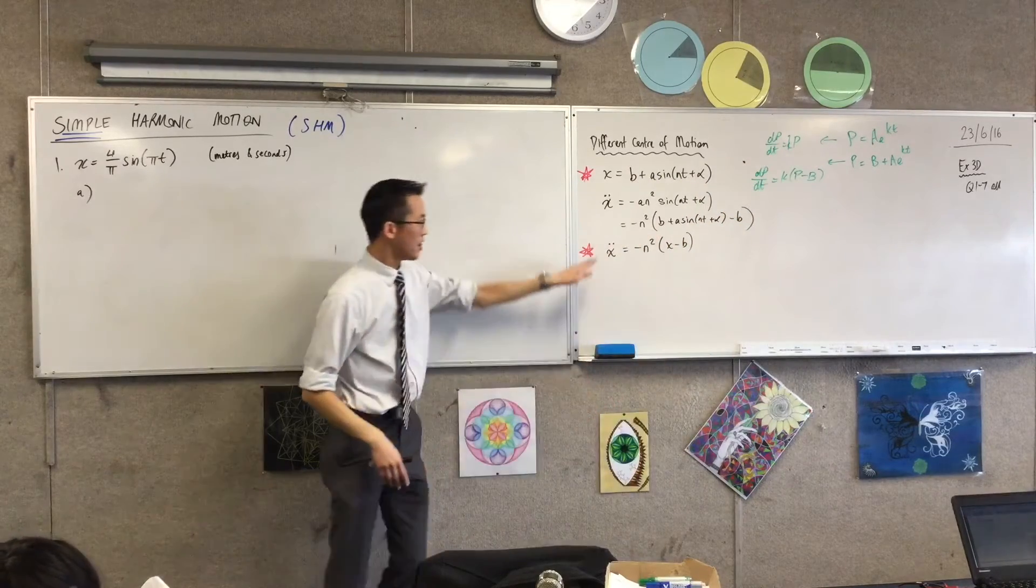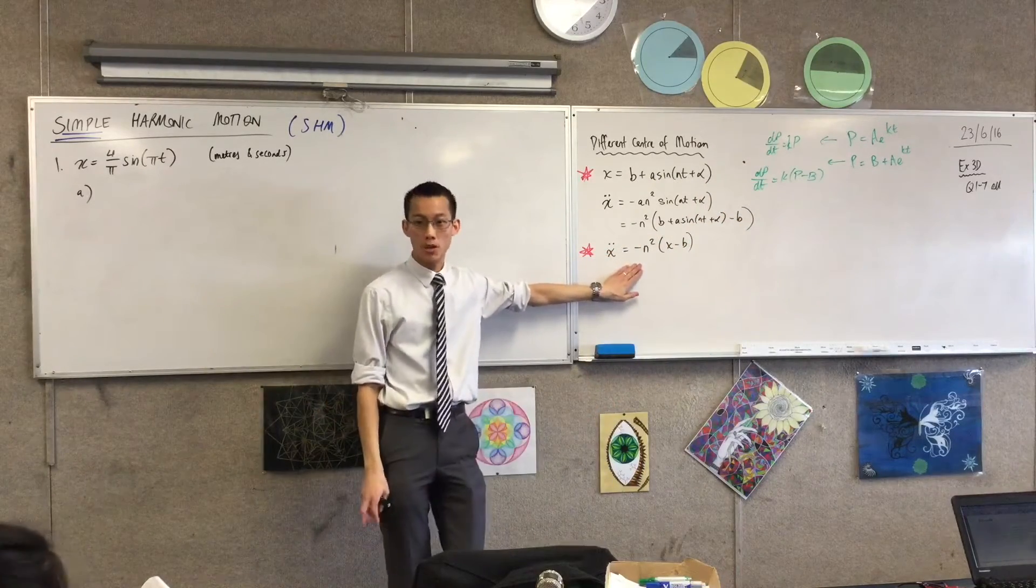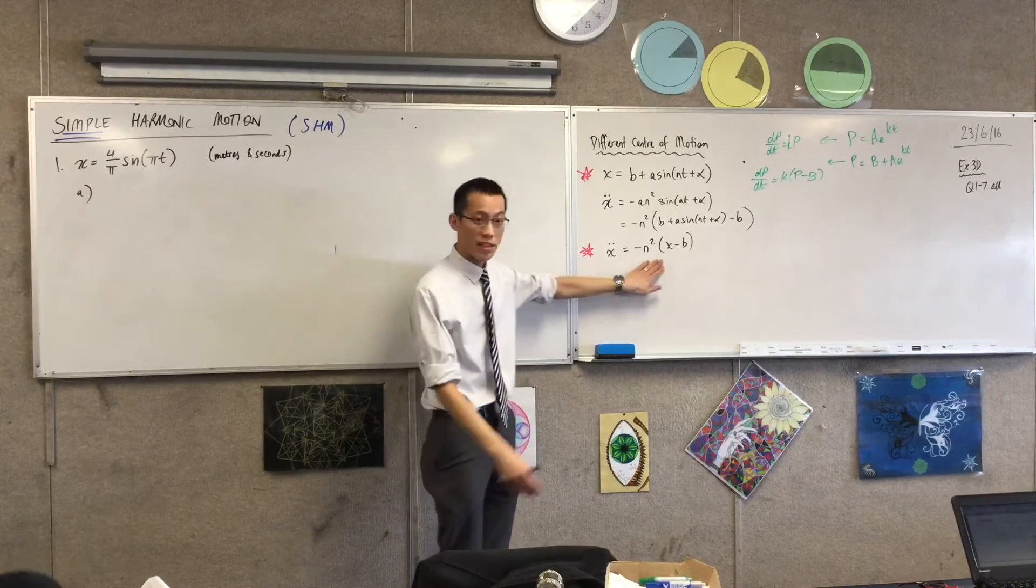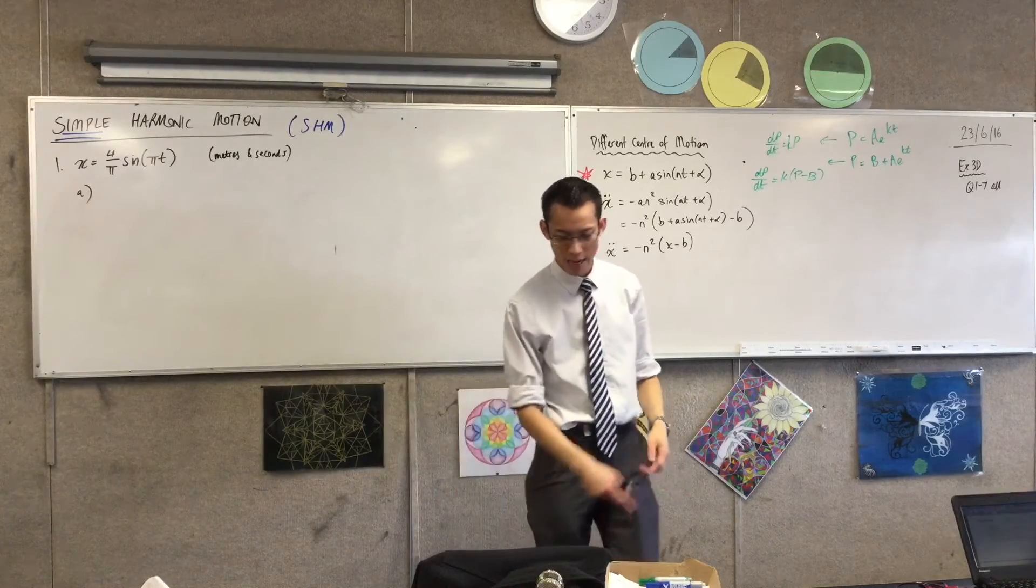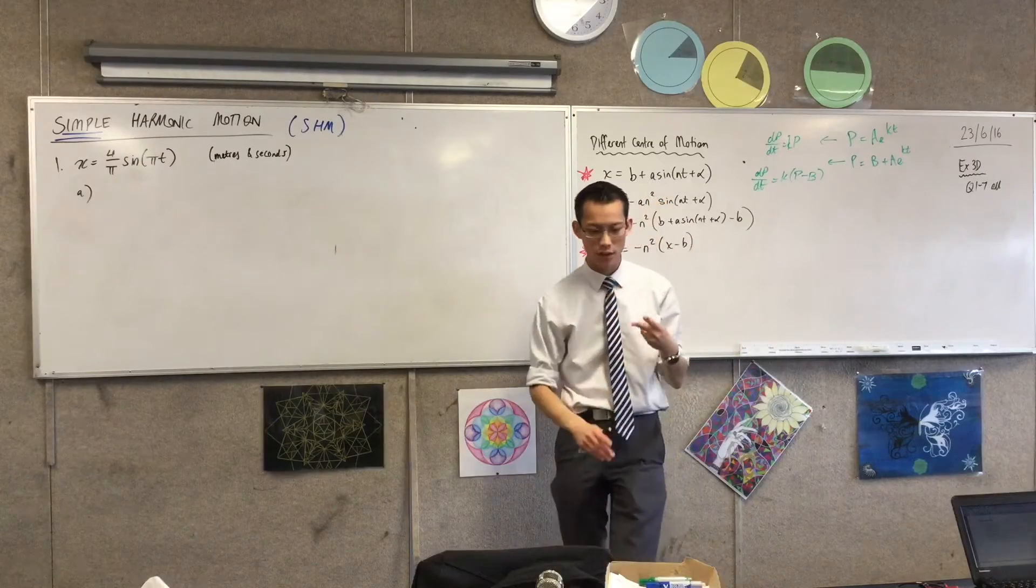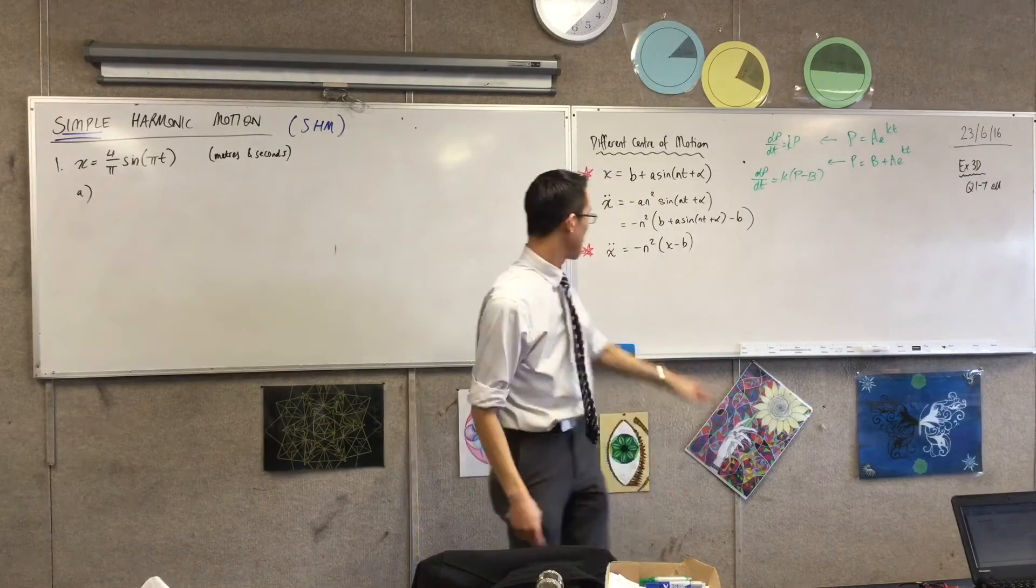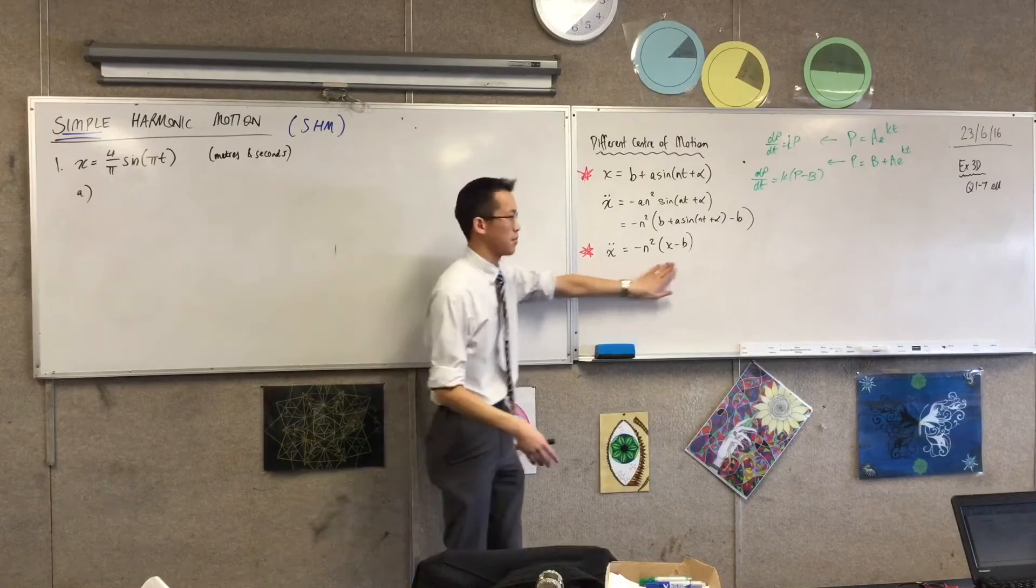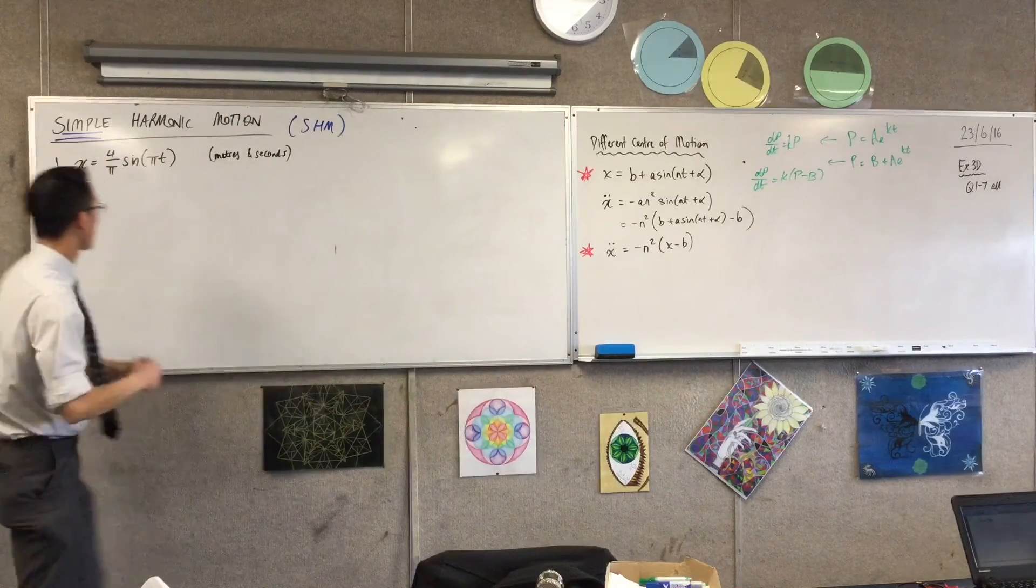In the same way, this is what makes simple harmonic motion simple harmonic motion. So what they're asking for in this first part is, differentiate to find your velocity function and your acceleration function, and show that, basically this, for particular values of n and particular values of v. So let's just quickly rehearse, this part's not hard.